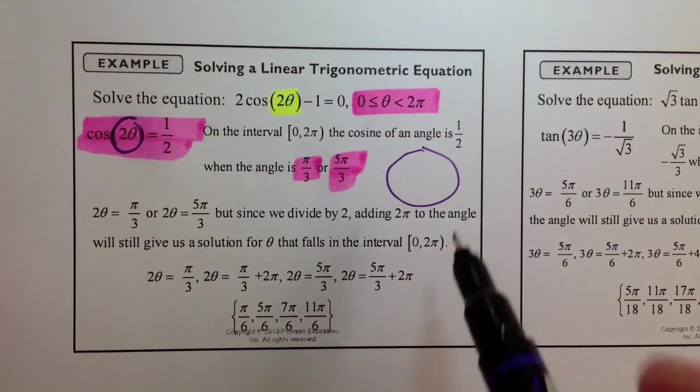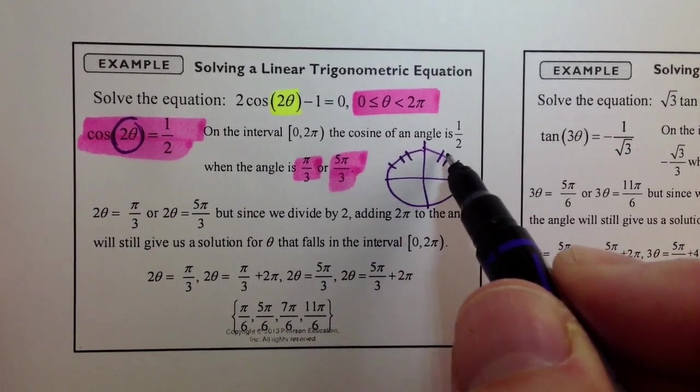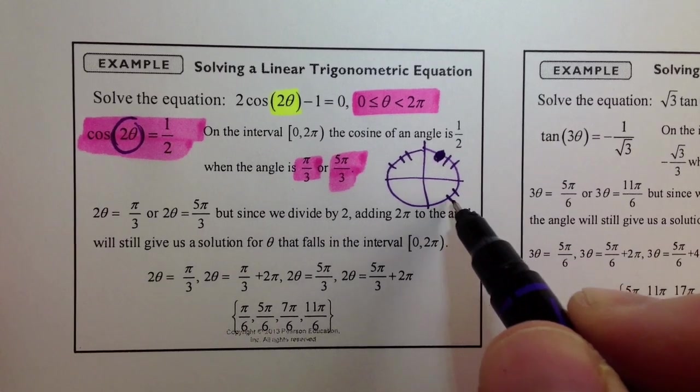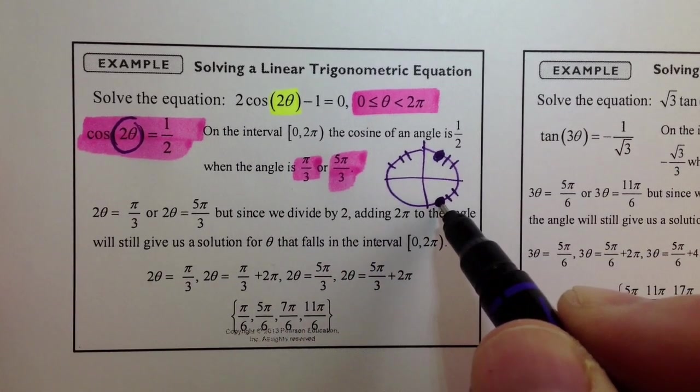we have the cosine of something equaling 1 half. Well, remember that cosine is 1 half away from the x-axis up here and down here at the angles described, pi over 3 and 5 pi over 3.